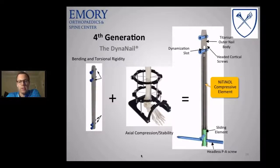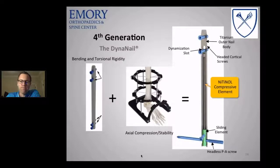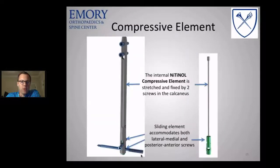The Dynanail provides the bending and torsional rigidity of an internal IM nail with the axial compression and stability of a multi-plane external fixator. This is accomplished through a nitinol compressive element within the center of the nail. Looking at the Dynanail design: there's a dynamization slot at the top, a titanium outer nail body, headed cortical screws proximally, a headless posterior-to-anterior screw, and a lateral-to-medial screw into the talus distally, with the nitinol element in the center.